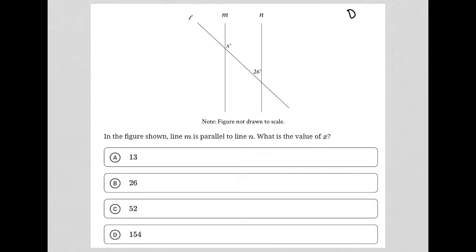This question is a diagram question. It looks like we have some parallel lines here. I'll confirm that by actually reading the question, but whenever we have parallel lines and this other line that crosses it, which is called